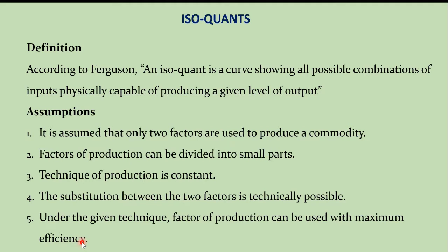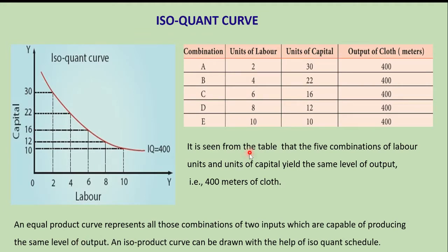To explain isoquants, first give an introduction, then a definition, followed by assumptions, and then the tabular column. Based on this tabular column, we can draw the graph. From the table, it is seen that the 5 combinations of labour and capital yield the same level of output.